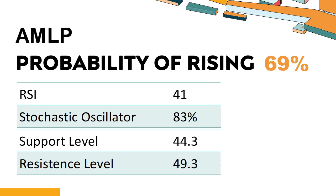How has AMLP performed according to technical data? AMLP's 14-Day Relative Strength Index (RSI) value was 41. When the RSI is above 25 and below 50, it generally indicates that the stock is moderately bearish. The current stochastic oscillator of AMLP is 83%. When the stochastic oscillator rises above the 80 level, it is usually considered overbought, indicating that the stock may be due for a price pullback.